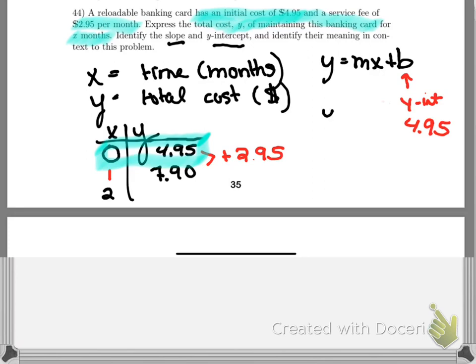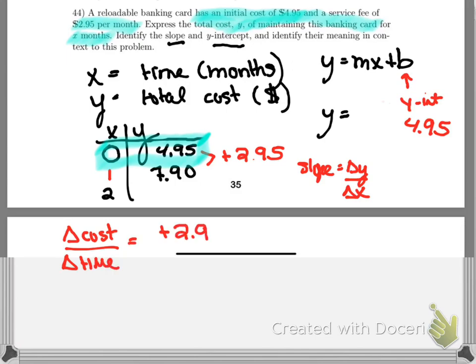Then we need to figure out our slope. Every single month, these people are taking $2.95 of my money. That's really annoying, but it's still true. So remember that our slope, one definition of slope is the change in Y over the change in X. Remember Y is your total cost. So the change in cost over the change in time. They are charging me an extra $2.95 every month.